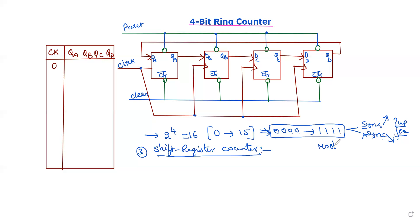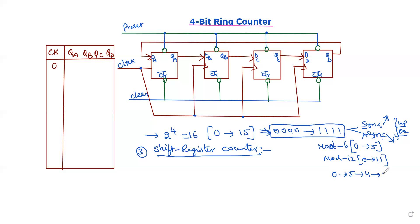If there is a mod 6 counter, it has a sequence of 0 to 5. If there is mod 12, it is 0 to 11. If you have a predefined mod or bit, you can design a sequence such as 0, 5, 4, 2. You can define fixed sequences.